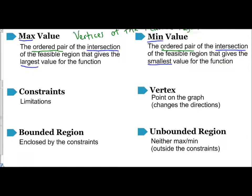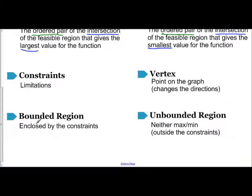We have our bounded region and our unbounded region. The bounded region is enclosed by the constraints. It's inside the constraints. The unbounded is outside those constraints. The unbounded is not going to contain the maximum or minimum value, but the vertices of the bounded region, one of those will either be the max or one of those is going to be the minimum values.